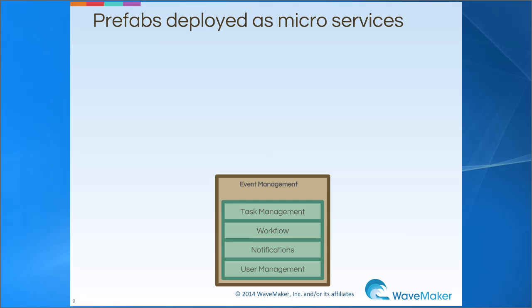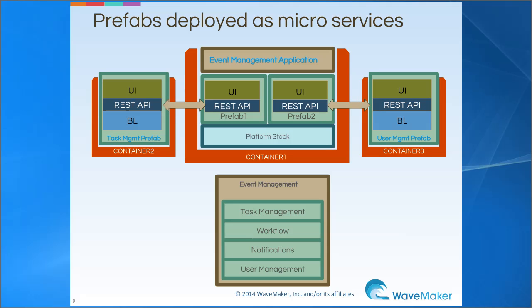Soon, WaveMaker will enable microservices architected apps to be developed and deployed. Using microservices architecture, complex applications are split into small independent services, each communicating with others through APIs. Each microservice can be designed as a prefab since the features of prefabs are more or less similar to microservices.